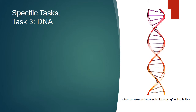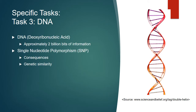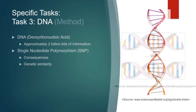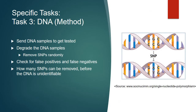The third task involves DNA analysis. DNA is approximately 2 billion bits of information, and SNPs are what we will be removing from the DNA to degrade it. We had volunteers get their DNA tested. We will degrade the DNA by removing SNPs and check for false positives and false negatives to see how many SNPs can be removed before DNA becomes unidentifiable.